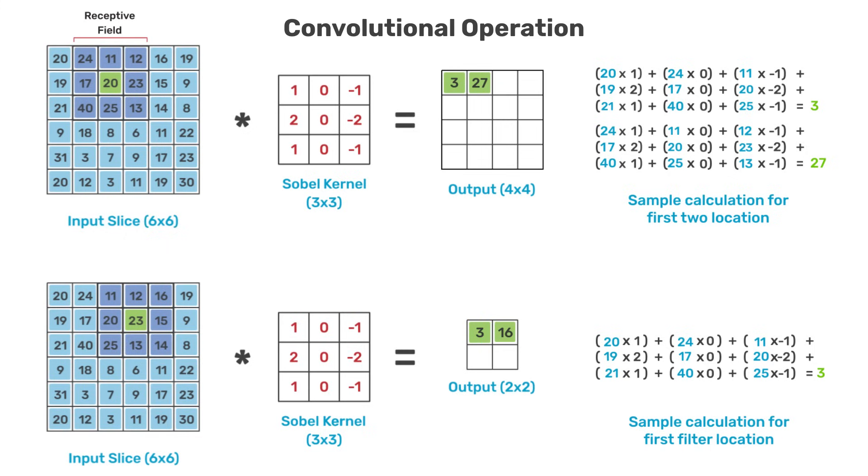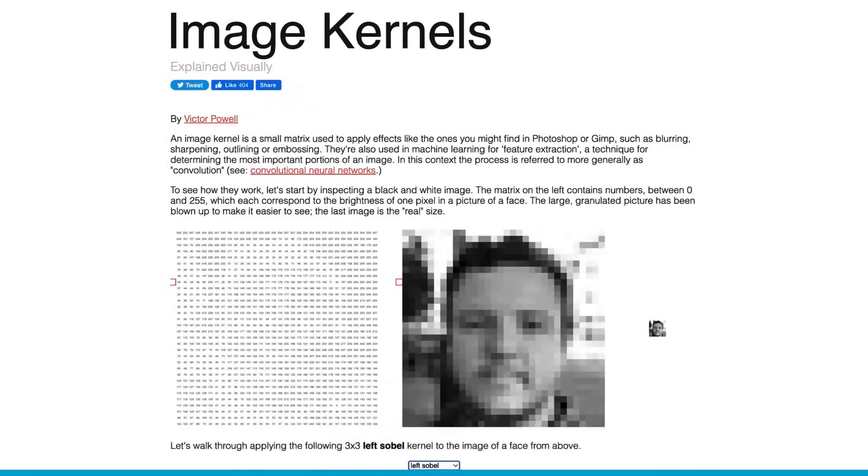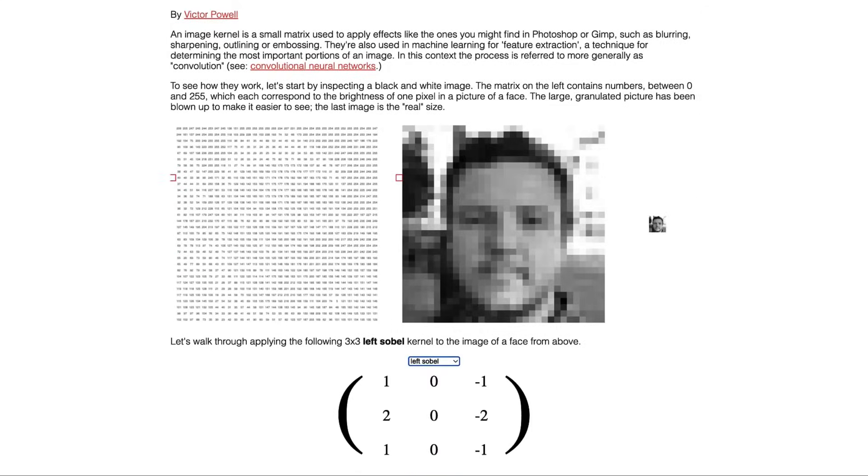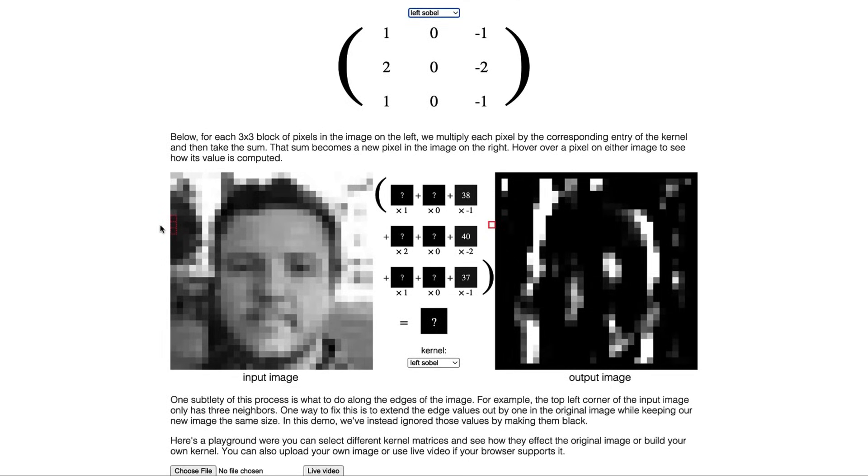Before we continue, we wanted to give you a more concrete example of how specific kernels can detect basic structures in an image. This is a really nice website that allows you to interactively experiment with various kernels using a pixelated input image so that you can appreciate the computations involved in the convolution operation and the associated output shown to the right.